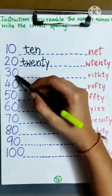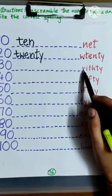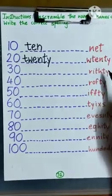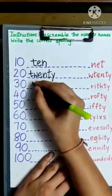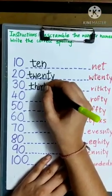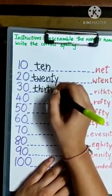Then we have number 30 and letters R-I-T-H-T-Y. So, we are going to write here T-H-I-R-T-Y.